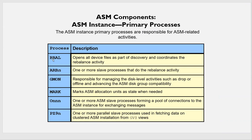Some background processes very necessary for ASM: RBAL is for rebalancing. The moment one disk goes down, the data from that disk will be rebalanced to the other disks — that is the rebalancing purpose. There are also one or more RBAL slave processes for rebalancing activity; RBAL is the primary process. GMON is responsible for managing disk-level activities such as dropping or offlining disks — whatever activity you do at the disk level, GMON is responsible for that. It also marks ASM allocation units as stale when needed.